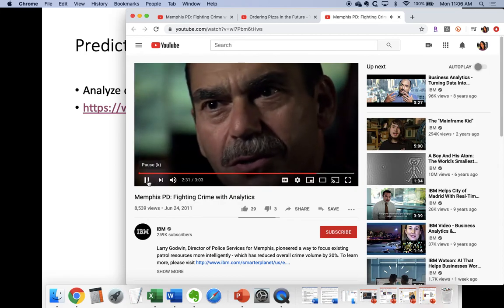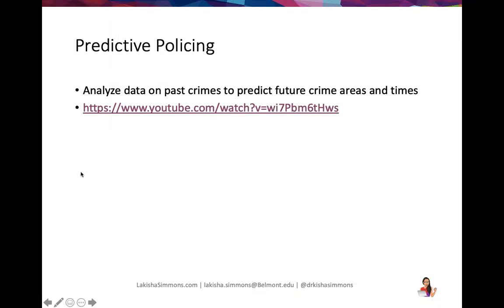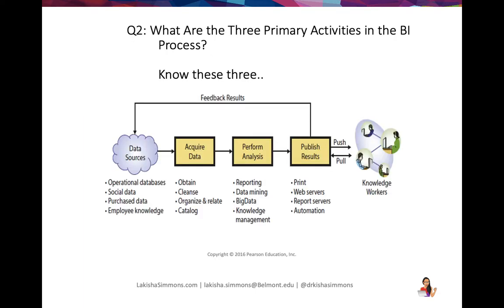I think that is so interesting — you can reduce crime by almost 30 percent just by using predictive analytics, which falls under the umbrella of business intelligence. It all comes down to analyzing past crimes in those areas. Obviously you have to be careful morally about how you target places, because you don't want to do something that's unethical or unfair to certain demographics. But if you can use the data to help predict times and areas, that gives the police department an edge in reducing crime.